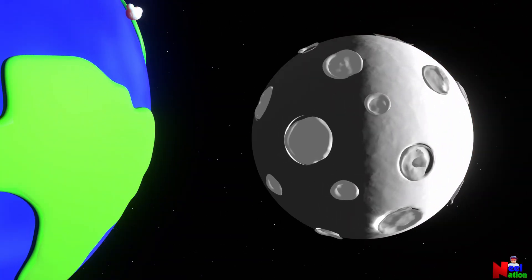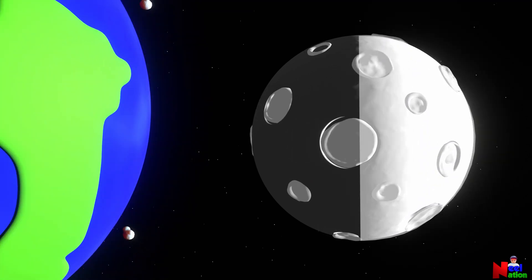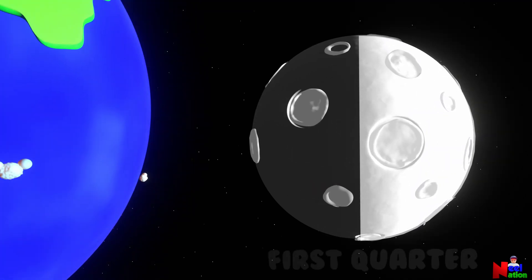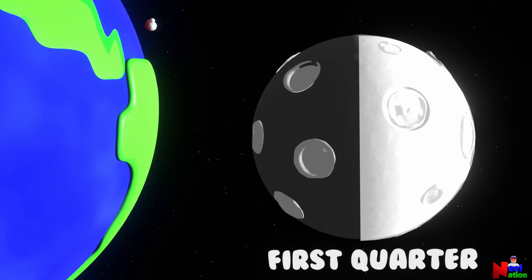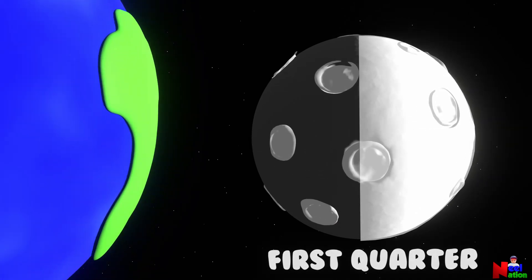In the next phase, half of the lit up side of the moon is visible from Earth. This phase is called the first quarter. In this phase, the moon looks like half a pie.